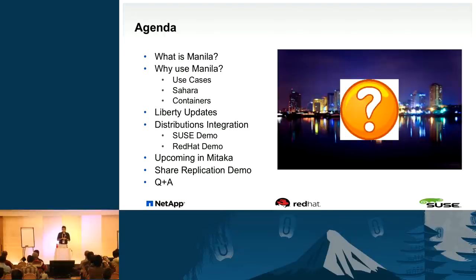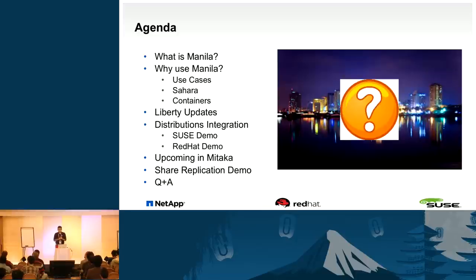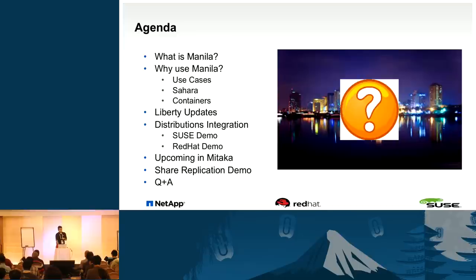This presentation is about Manila. The agenda: we'll first cover what Manila is, then why you want to use Manila, and run through a couple of use cases. Sean is going to touch on containers and Sahara as well, since those are hot topics. Liberty updates — the main topic — will be next. We'll then go through distributions integration with Red Hat and SUSE, using RHEL OSP and SUSE Cloud. After that we'll cover new features coming in Mitaka, including a demo of Share Replication. Then we'll open the floor for questions.